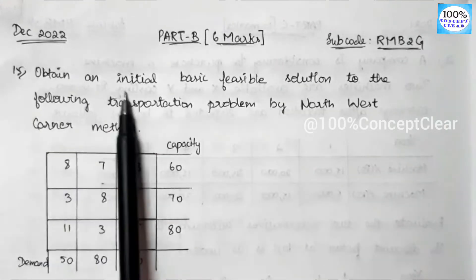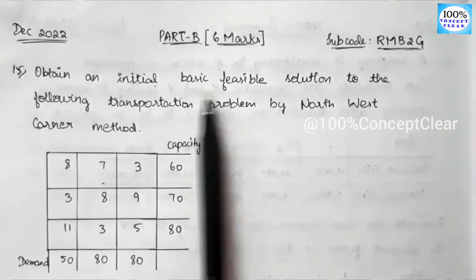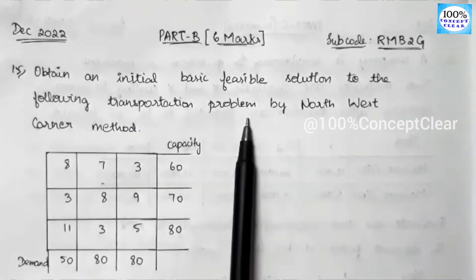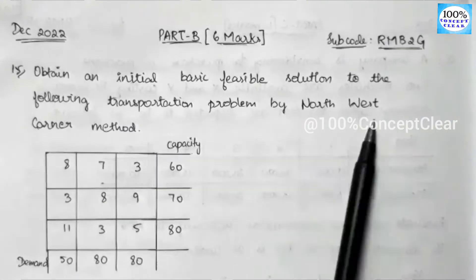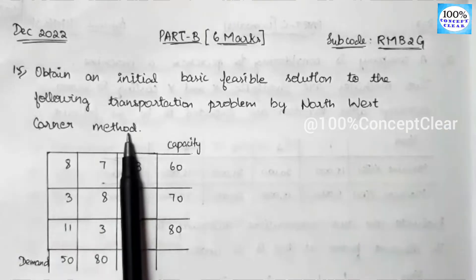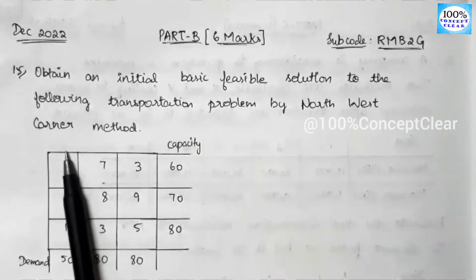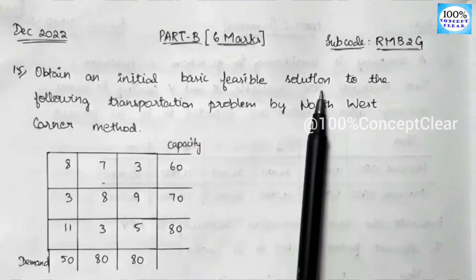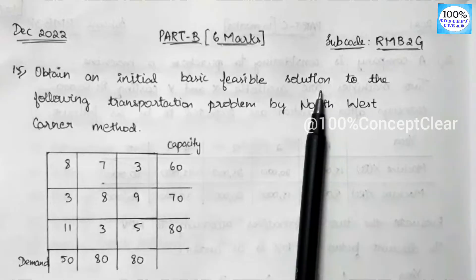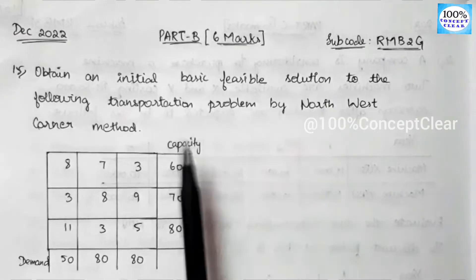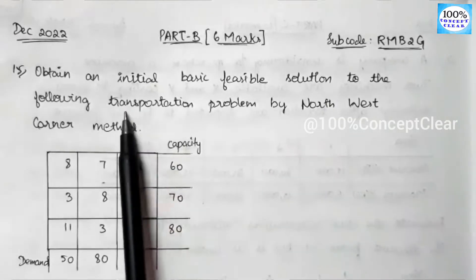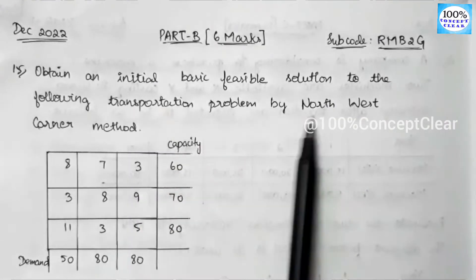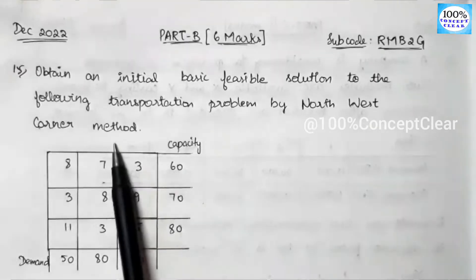The question is to obtain an Initial Basic Feasible Solution to the following transportation problem by the North-West Corner Rule method. This is a transportation problem, and you can also use any method you prefer.